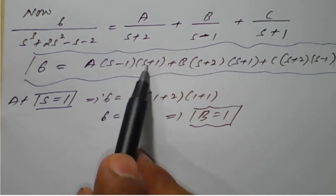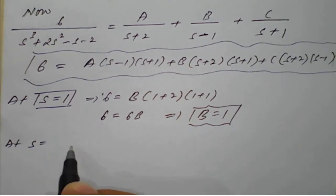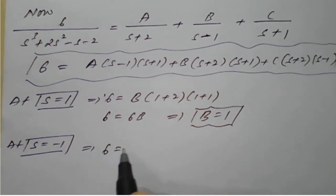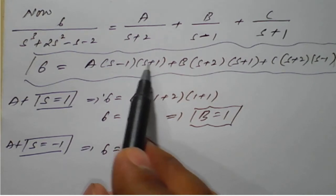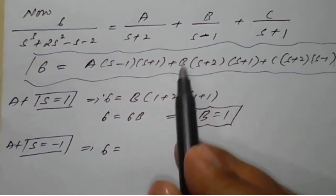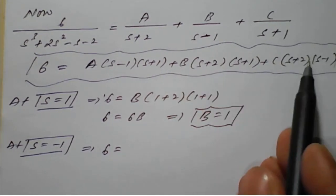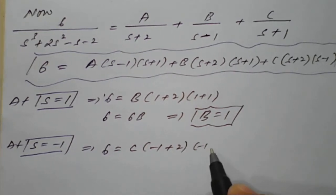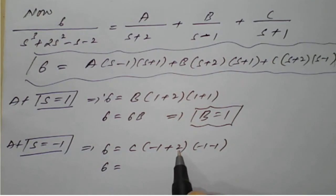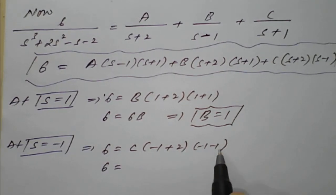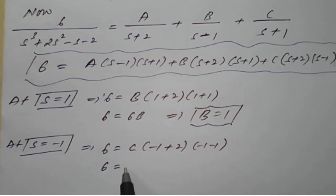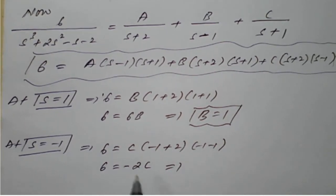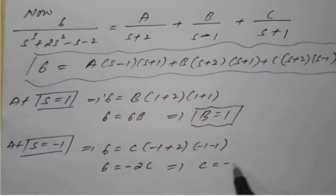To find C, put S equal to minus 1 so that the A and B terms vanish. This gives 6 equals C times minus 1 plus 2 times minus 1 minus 1, which is C times 1 times minus 2, equals minus 2C. Therefore C is equal to minus 3.